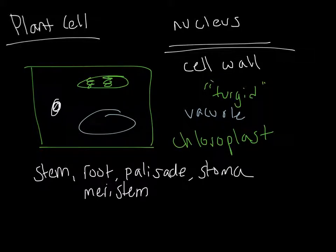In terms of types of cells, there are things like the stem, the root, palisade cells — which are specific cells for photosynthesis — stoma and stomata, which have to do with water loss, and meristem, which are like the stem cells of the plant and help make new cells for the future.